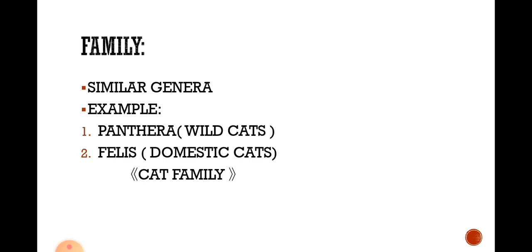The next category is Family. Similar genera come under a family. For example, Panthera — meaning wild cats — and Felis — meaning domestic cats — are similar in appearance and some properties, and hence they are placed under the cat family.